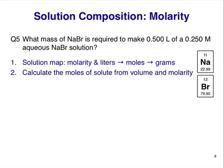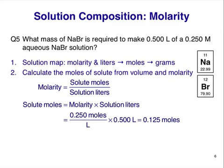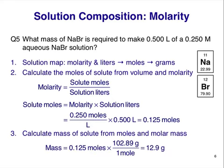Our next step is to calculate moles of solute using the volume and molarity information given in the question. The definition of molarity is: molarity equals solute moles divided by solution volume in liters. We can rearrange this as: solute moles equals molarity multiplied by solution liters. Inserting the values from the question, we get 0.125 moles — note that units cancel appropriately. All that remains is to calculate the mass of solute from the moles of solute. For this calculation, we'll need the molar mass of sodium bromide: 102.89 grams per mole. So the last step gives us: 0.125 moles × 102.89 g/mol = 12.9 grams.